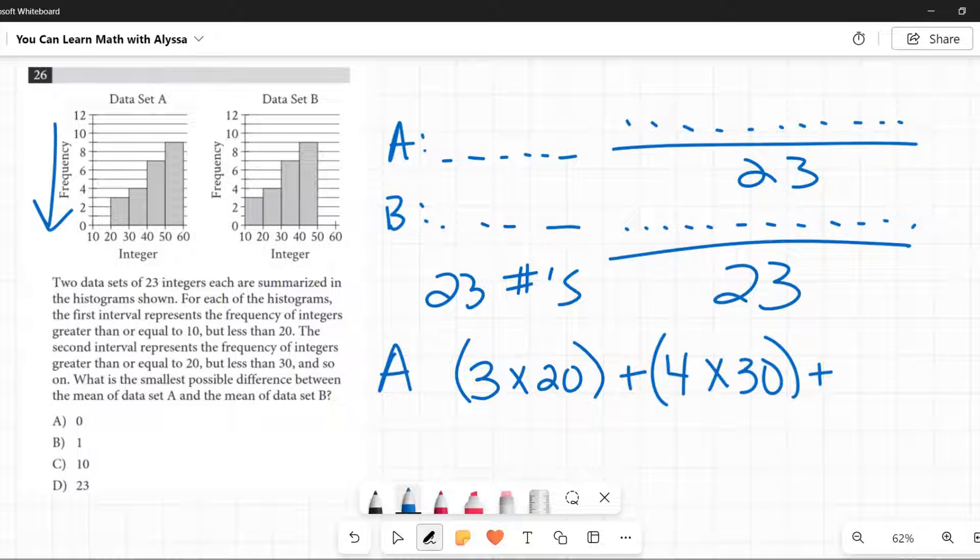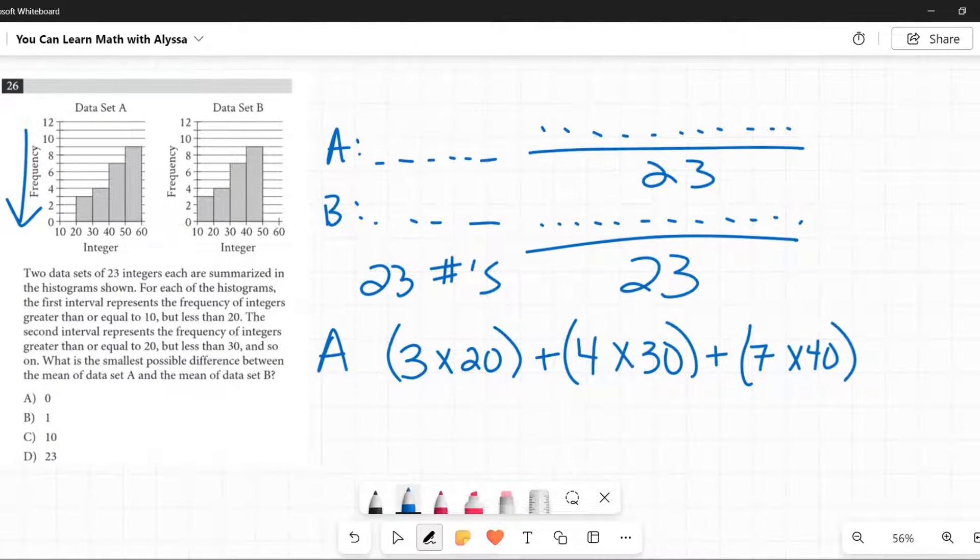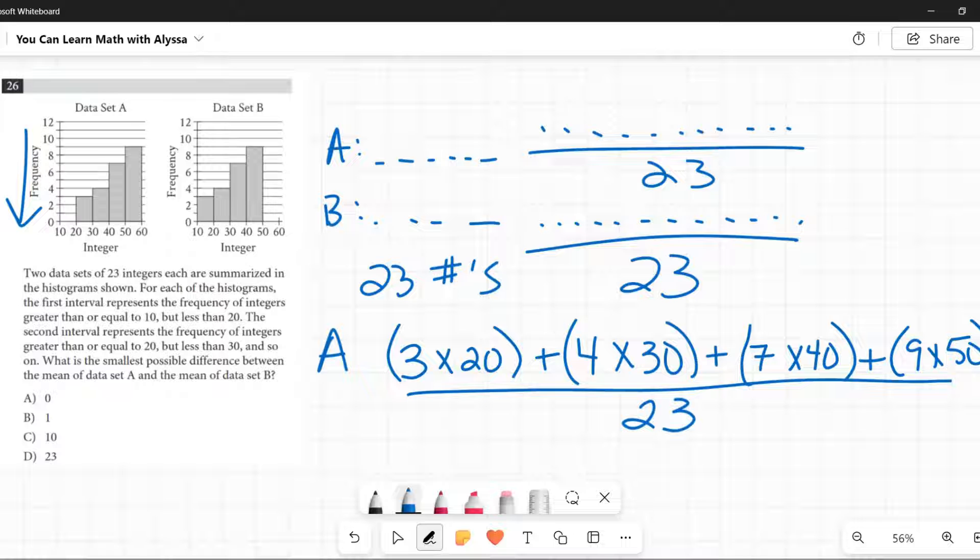And the next one, we got from 40 to 49, and there's seven of them. The lowest possible value would be 40, so 7 times 40. Okay, and then our last interval here is from 50 to 59, and there are nine of them. So 9 times 50. I'm dividing all of this by 23.